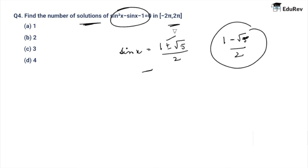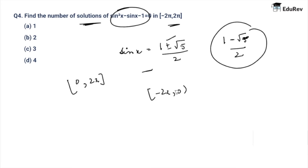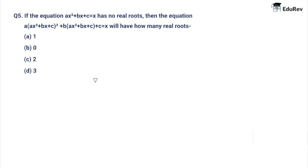x can attain two values in [0, 2π] and two more values in (−2π, 0). Thus there are four solutions in total — that is option D.